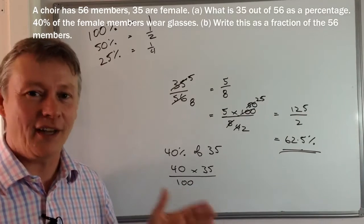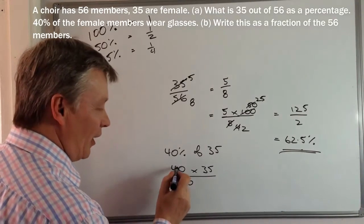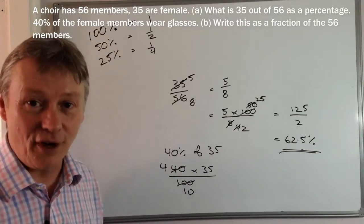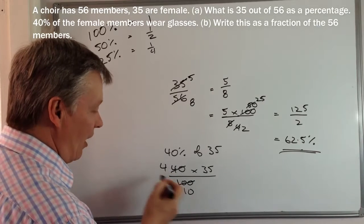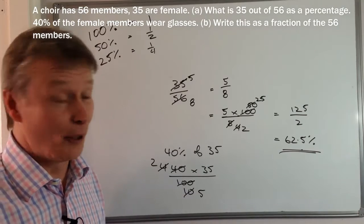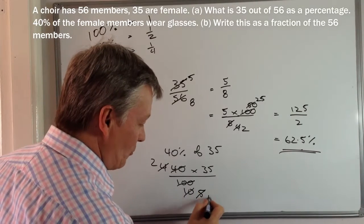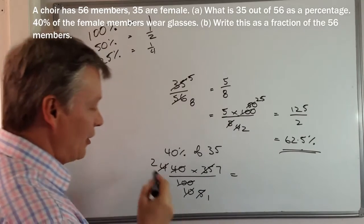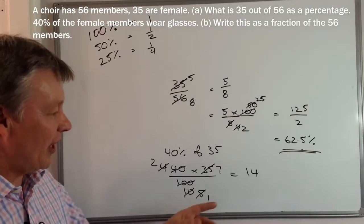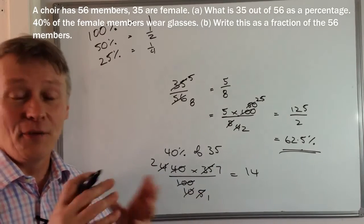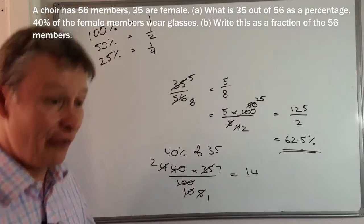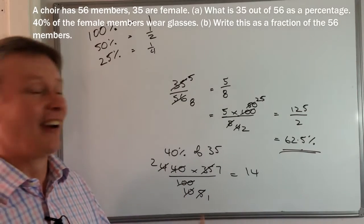And again, I can simplify that calculation as much as I want. I can divide through by 10 and that becomes 4 over 10. I'm going to divide through again by 2. That becomes 2 and that becomes 5. I'm going to divide through again. That becomes 1 and that becomes 7. So my calculation is 2 times 7, which is 14. Okay. So 14 of the members of the congregation wear glasses.